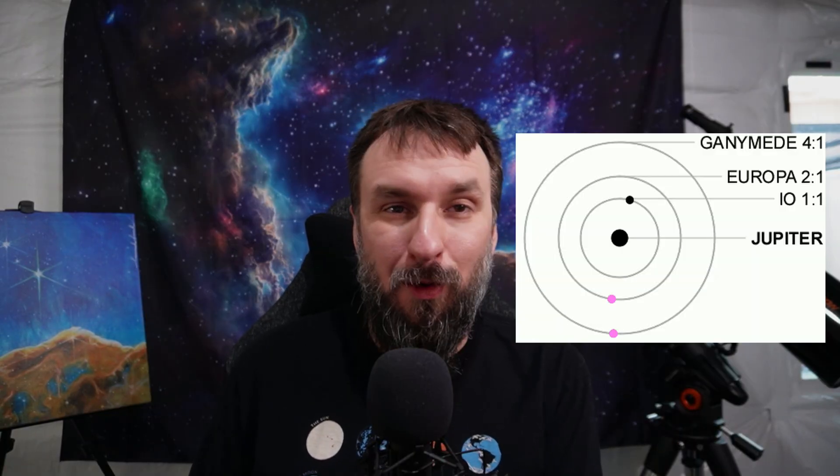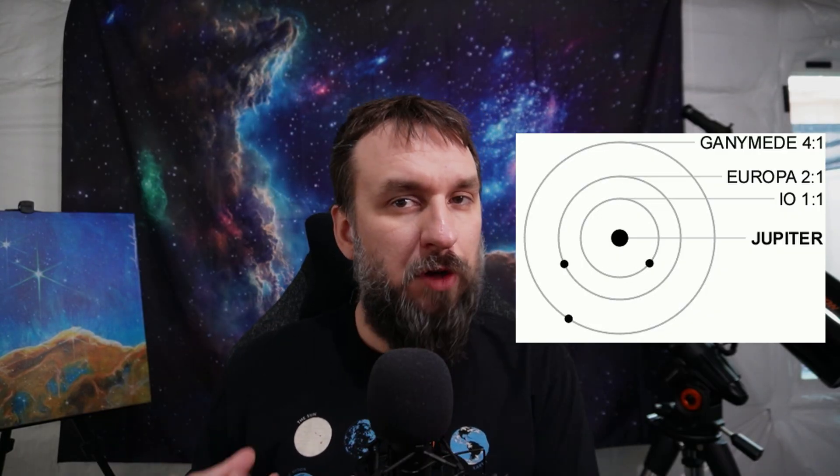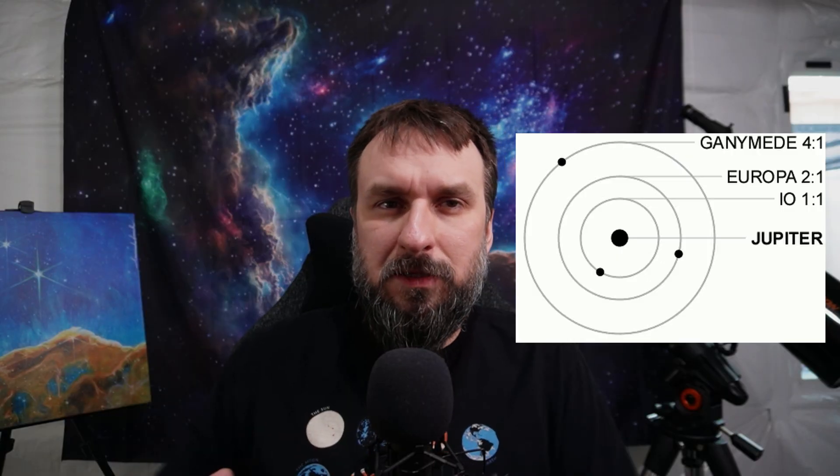Ganymede is also in an orbital resonance with both Io and Europa. For every orbit it completes, Europa completes two orbits, and Io completes four orbits. The type of resonance the moons are in is known as the Laplace resonance. This means that it involves three orbiting bodies — Ganymede, Europa, and Io — where the orbital periods are in a specific ratio.